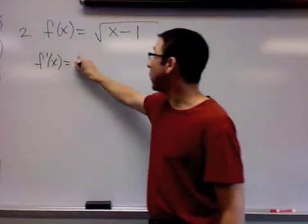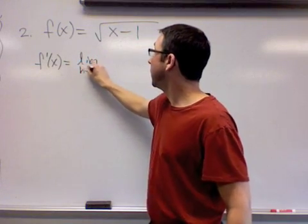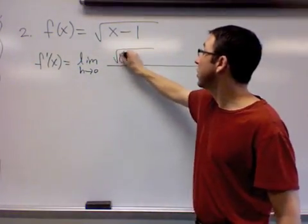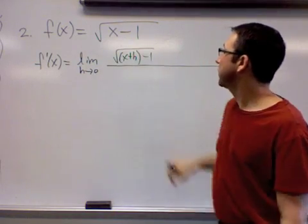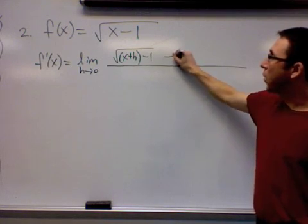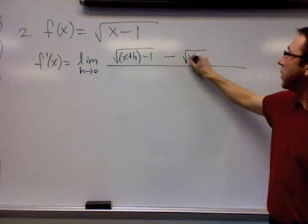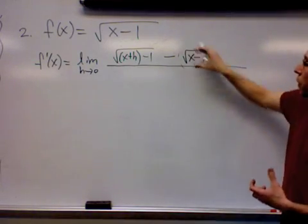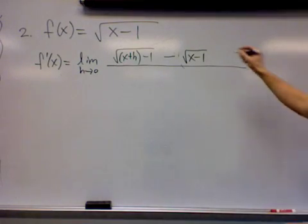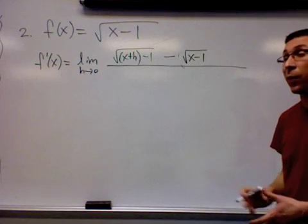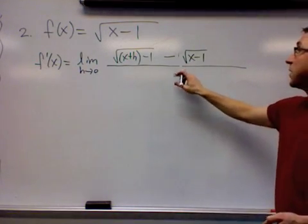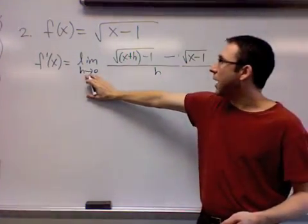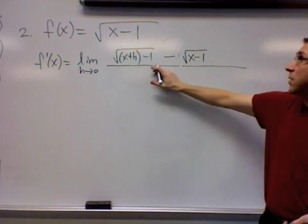To do that, you can use the limit formula. The limit as h approaches 0. You're going to follow the formula — replace x with x plus h, then subtract away the original. You don't need parentheses around here because that radical is already grouping the x minus 1. There's still the h underneath. You cannot let the limit approach 0 because if you did, you'd get an undefined situation here.